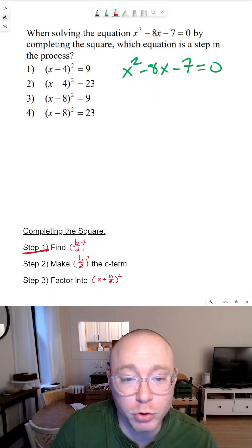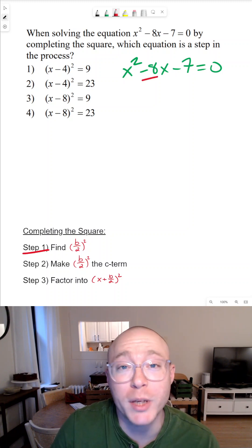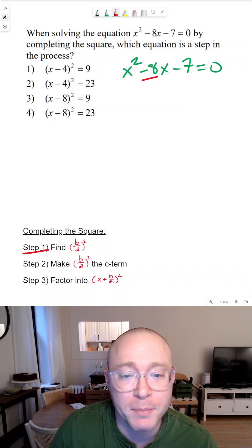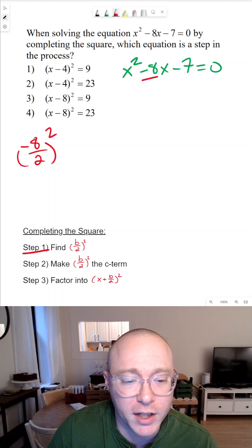Step one, find b divided by two squared. b is just a constant that represents whatever number we have in front of x to the first power. So in this case, we have negative eight. Negative eight divided by two would give us negative four, and negative four squared would end up giving us 16.